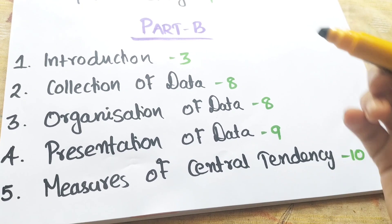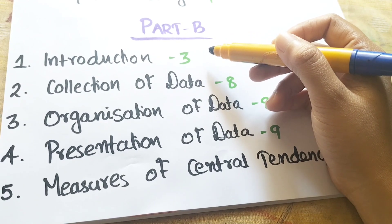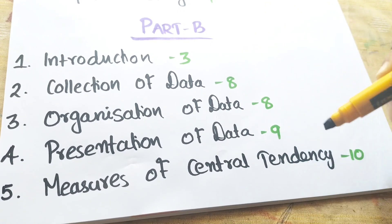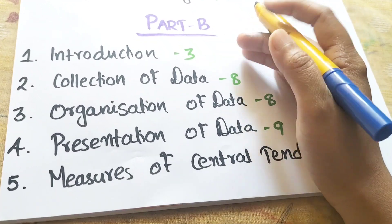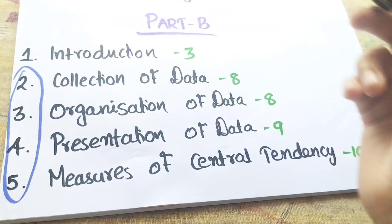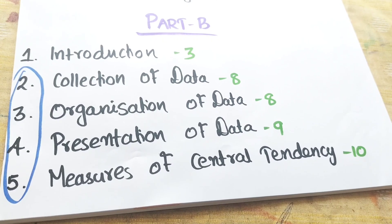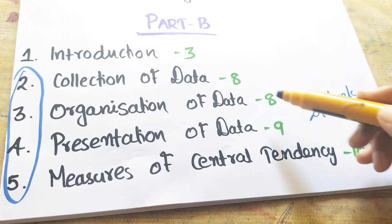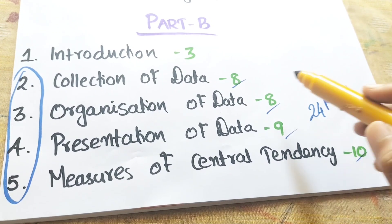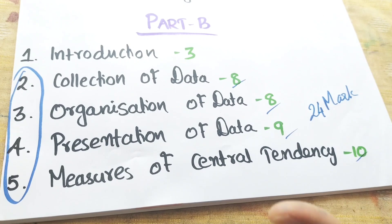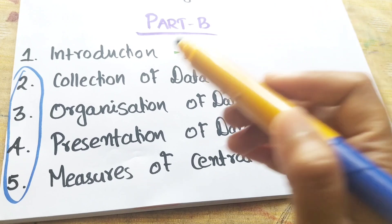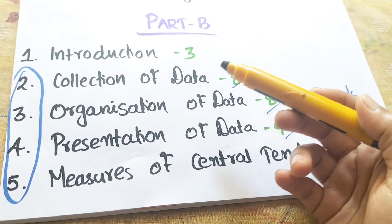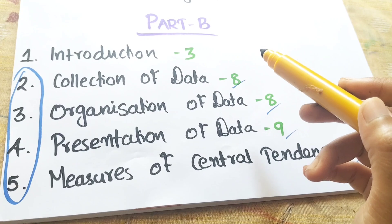Part B is the statistics section, starting from the first and third chapters. The key topics are: collection of data, organization of data, presentation of data, and central tendency. If you study these four topics, you will definitely pass. Collect data from primary sources, secondary sources, pilot survey, sampling errors, and non-sampling errors.